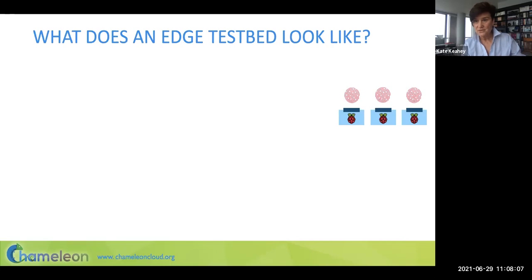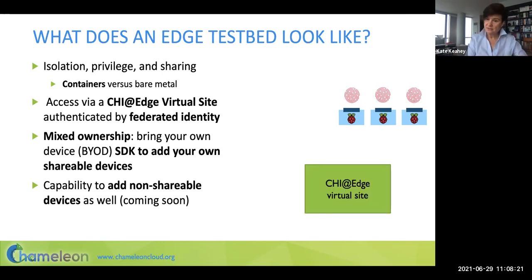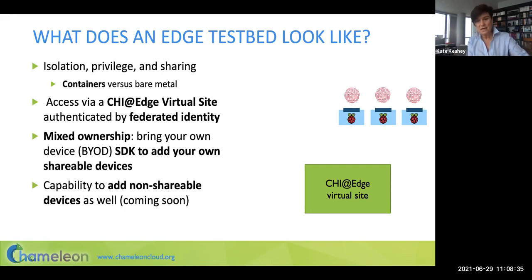We came up with four initial points defining that testbed. First, we're going to have a Chi@Edge virtual site. In the main Chameleon testbed, you can reserve resources at TACC, at University of Chicago, at Northwestern — each site has a gateway. Chi@Edge does not have such a gateway because those devices could be anywhere, so we created a virtual site that can reach any device anywhere. Through that virtual site, users can make requests to reconfigure edge devices and connect those edge devices to AI capabilities in the cloud.